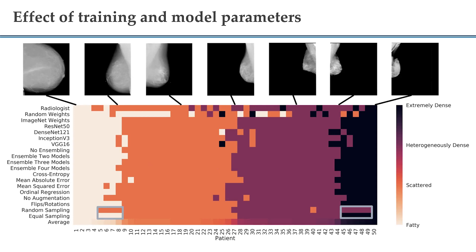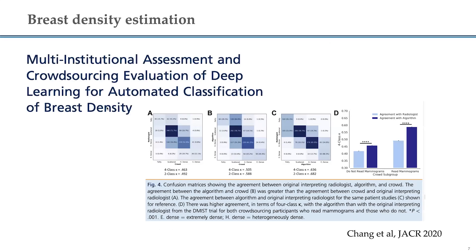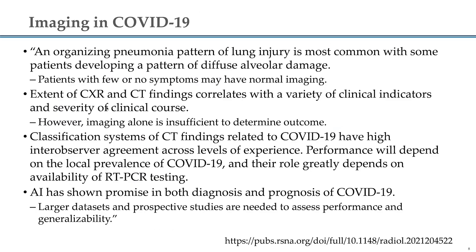One thing that's interesting and not talked about as much: even though the algorithm in aggregate might look similar to human performance in terms of metrics like kappa, on a per-image basis the output can vary quite a bit. It's really important to think about what aggregate measures mean versus individual performance. We also found that sampling strategies matter a lot — when dealing with low-prevalence diseases, methods to balance sampling can greatly vary algorithm performance for low-prevalence classes. We then took this algorithm and did a crowdsourcing activity, finding it performed quite well relative to a crowd of readers.